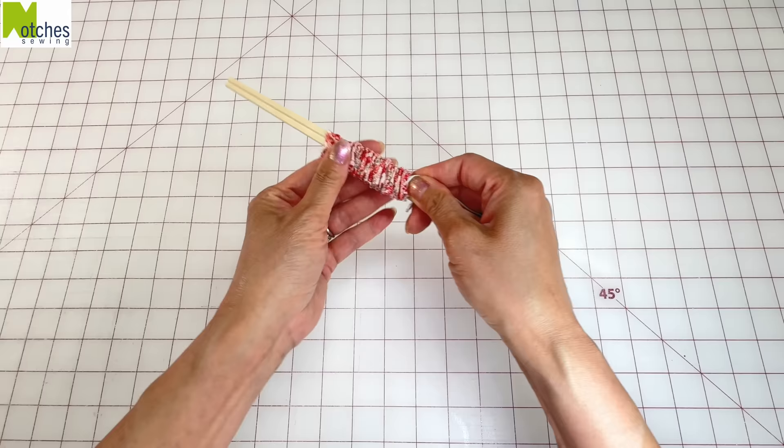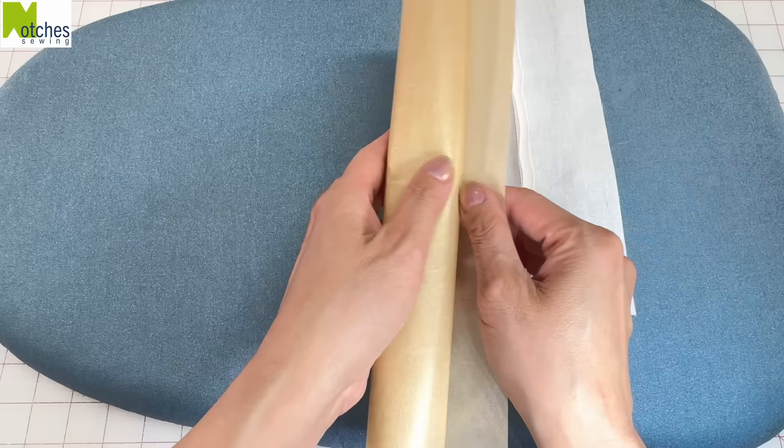These takeaway or takeout chopsticks make really good bodkins to thread in your elastic or your flat cords.